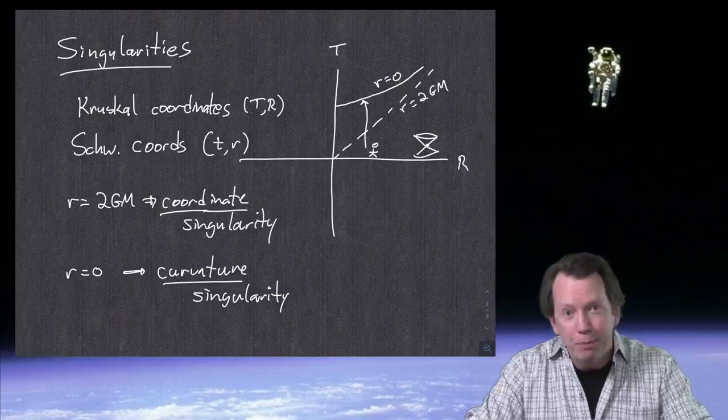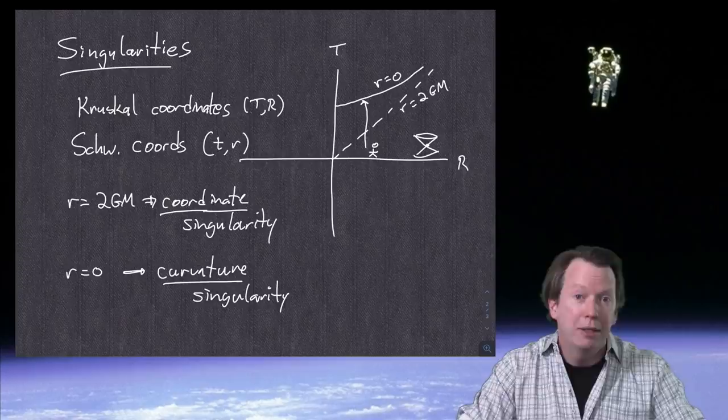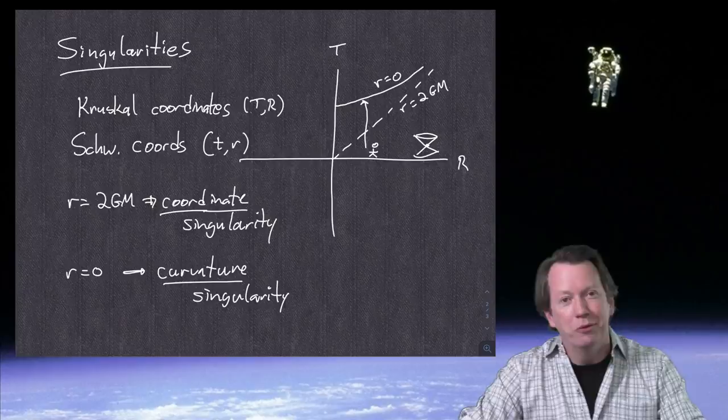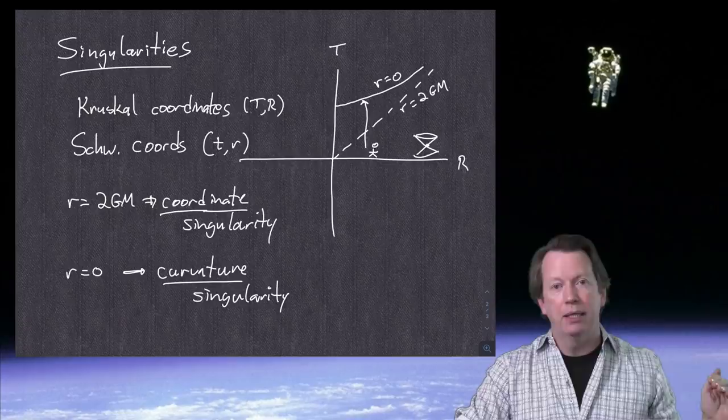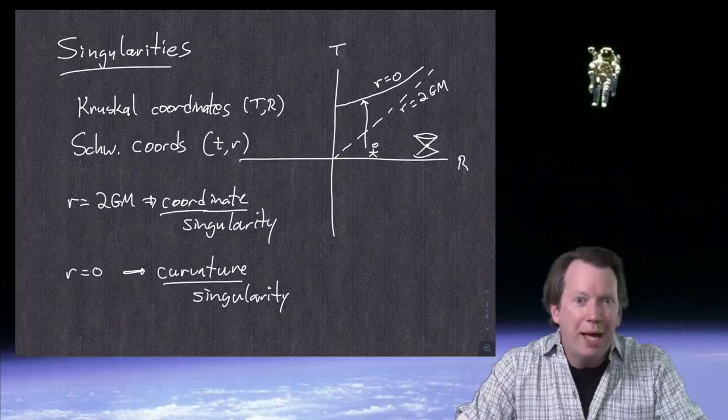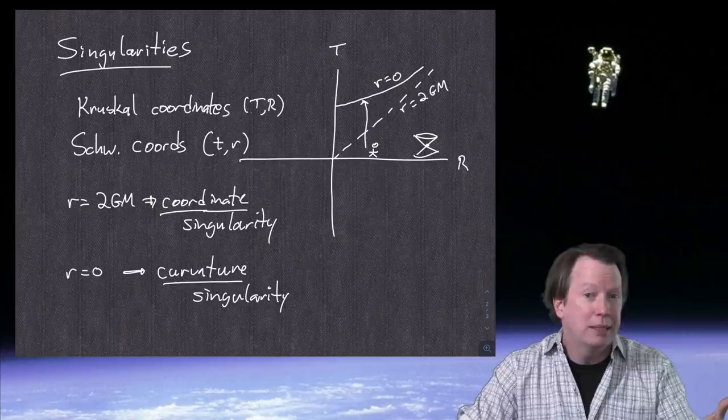Exactly the same thing is true at the Big Bang. The Big Bang is a singularity in the past — T = 0 rather than R = 0 in the expanding universe metric. According to classical general relativity it's the edge of spacetime, but we all know that's not the final story. There could be spacetime earlier than the Big Bang, or maybe there's not. We just don't know.